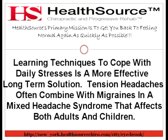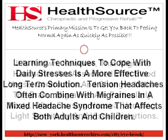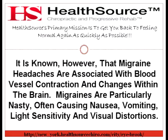No one is sure what causes migraine headaches. The most recent thoughts on the cause of migraine is that the locus cerulis, or central control of the brain, gets overloaded with signals causing serotonin production to get off kilter. It is known, however, that migraine headaches are associated with blood vessel contraction and changes within the brain. Migraines are particularly nasty, often causing nausea, vomiting, light sensitivity, and visual distortions. They often occur in cycles that can be tracked or when triggered by specific stimuli.